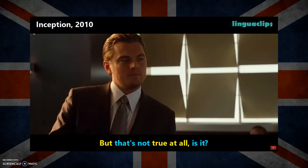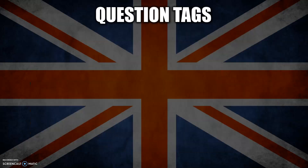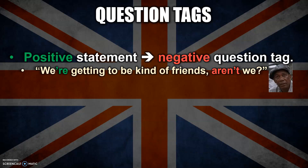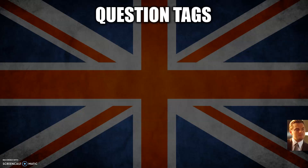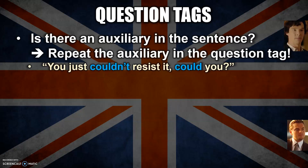Let's quickly sum up the rules we've just seen. A positive statement takes a negative question tag, and then you expect a positive answer. For example: 'We're getting to be kind of friends, aren't we?' We use a question tag to ask for agreement or confirmation. A negative statement takes a positive question tag and you expect a negative answer. For example: 'You just couldn't resist, could you?' This sentence is also a good example of the rule that if there is an auxiliary — can, could, will, would, have, etc. — then you repeat your auxiliary in the question tag.